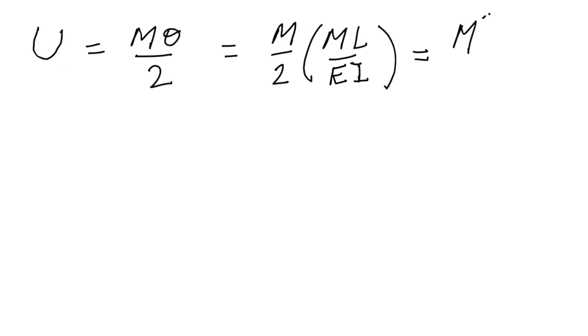Going a little further, we have that the strain energy of deflection equals M theta over two. Now we can choose to either eliminate M or eliminate theta. If we eliminate theta, we end up with M times M over two, and theta is ML over EI, so we get our first equation: M squared L over 2EI. That's the strain energy if you know the bending moment diagram.